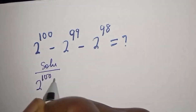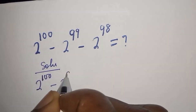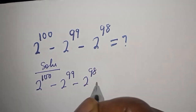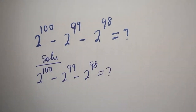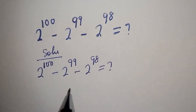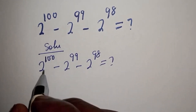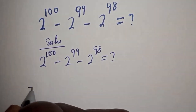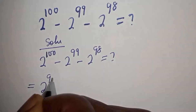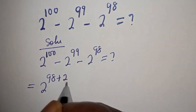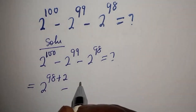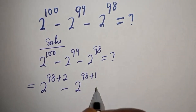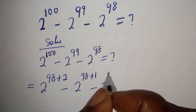2 raised to power 100 minus 2 raised to power 99 minus 2 raised to power 98 is what we want to simplify. Then 2 raised to power 100 can be written as 2 raised to power 98 plus 2, minus 2 raised to power 99 can be written as 2 raised to power 98 plus 1, minus 2 raised to power 98.